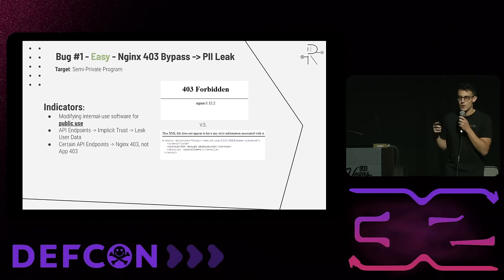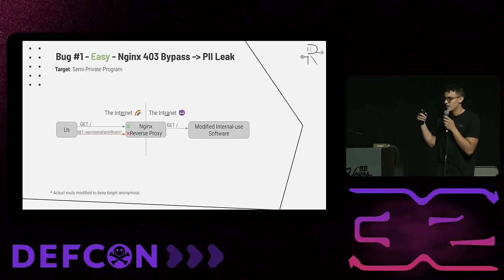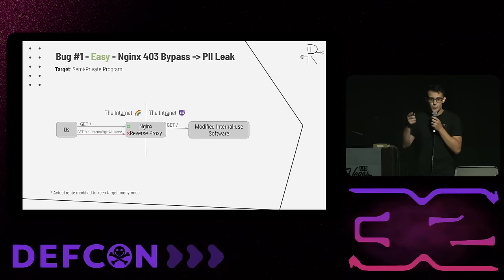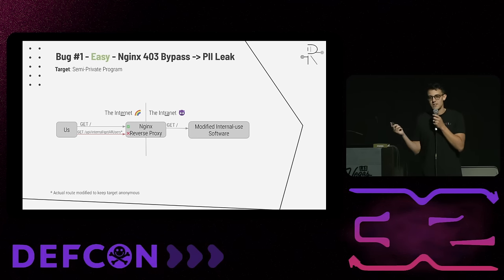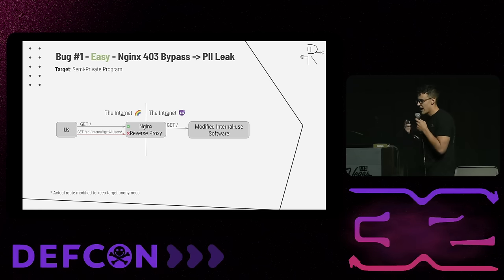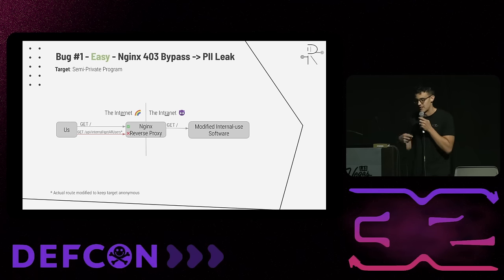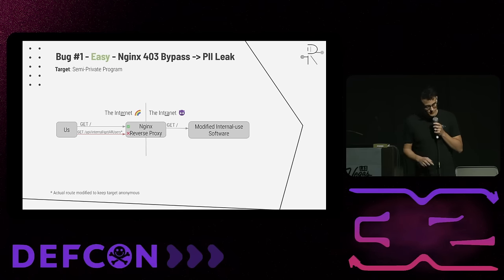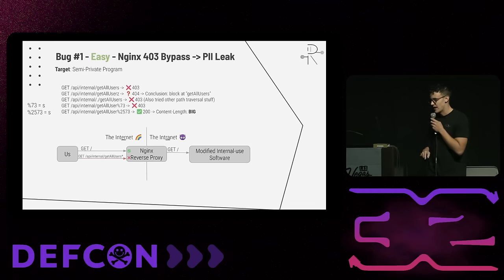I identified a couple of those endpoints in the internal-use version of the software, and when I hit them on the API, I got an NGINX 403 — not the application-level 403. The NGINX 403 implies a structure: we send a request over the internet to the NGINX reverse proxy standing in front of the backend server, which processes the request and gives the response back. When we request the API endpoint slash API slash internal slash get-all-users, it hits the reverse proxy and the reverse proxy says: not allowed.